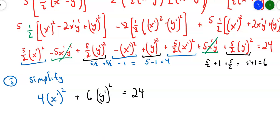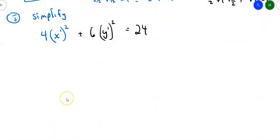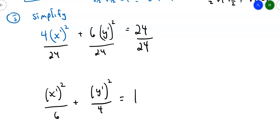Remember the rule for ellipses is you really want a 1 on the other side. So let's divide everything through by 24, which gives me x'²/6 + y'²/4 = 1.